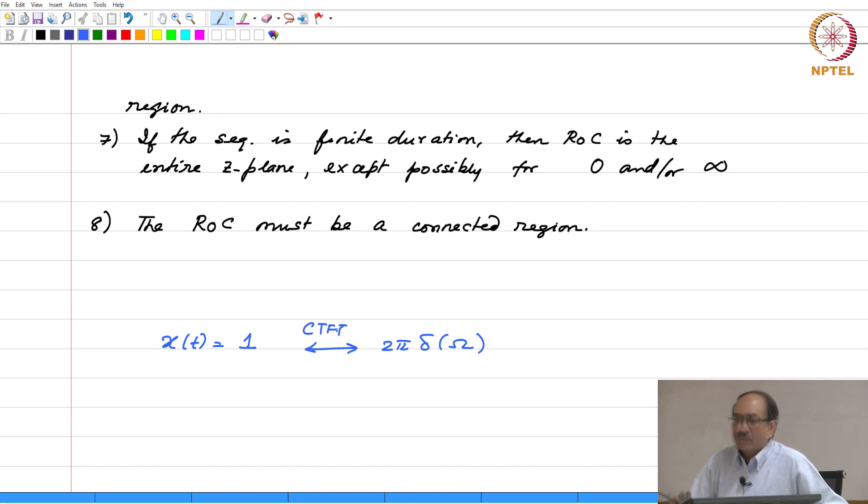What about the bilateral Laplace transform of x of t equals 1? This can be written as u of t plus u of minus t. u of t will have Laplace 1 over s real s greater than 0, u of minus t will have Laplace with real s less than 0. Together these two cannot exist because there is no common overlap region. Therefore, here is an example of a function that has continuous time Fourier transform, but no Laplace.